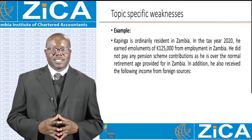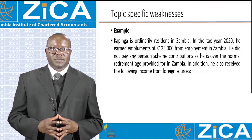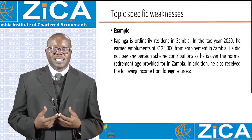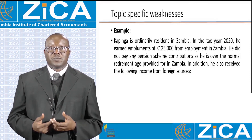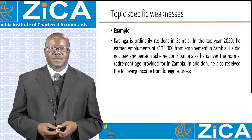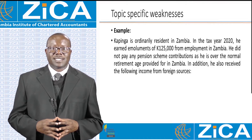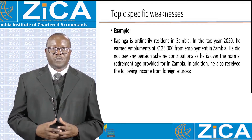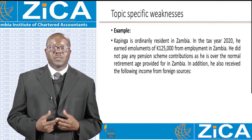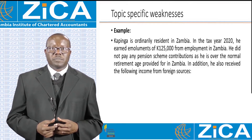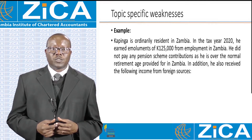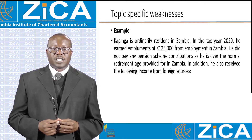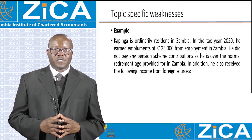We have an example to assist us on how to approach the income tax computation for a resident person who has received foreign income from two or more sources. Tappinga is ordinarily resident in Zambia. In the tax year 2020, he earned emoluments of 125,000 kwacha from employment in Zambia. He did not pay any pension scheme contributions as he is over the normal retirement age provided for in Zambia. In addition, he also received the following income from foreign sources.